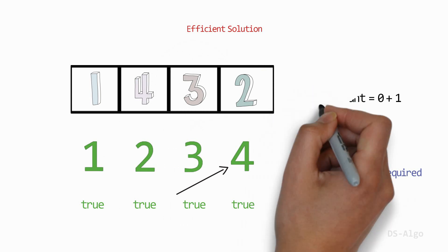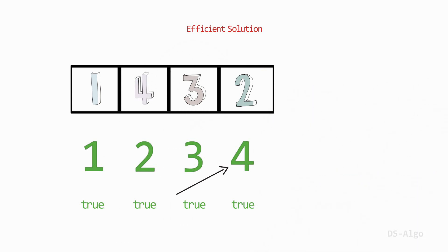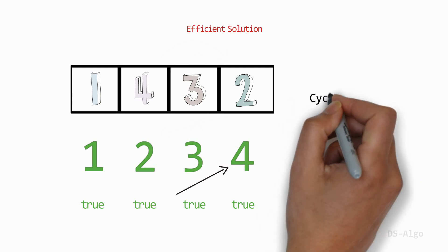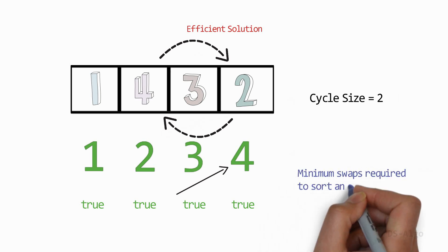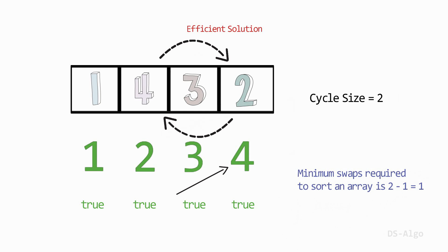Before going to the actual implementation, we can also express this solution in terms of cycles. In this case, there is a cycle between element values 4 and 2 — from 4 to 2 and from 2 to 4 — so the size of this cycle is 2. Therefore, the minimum swaps required to sort this array is 2 minus 1, which is 1. By both methods, we get the same result.